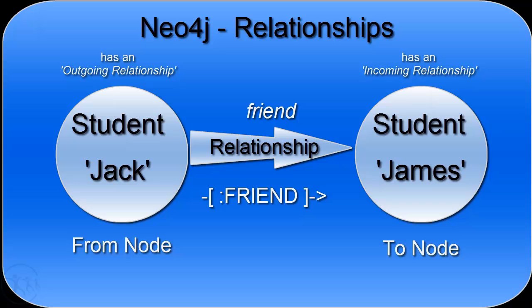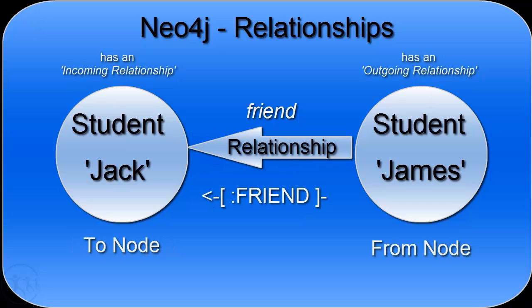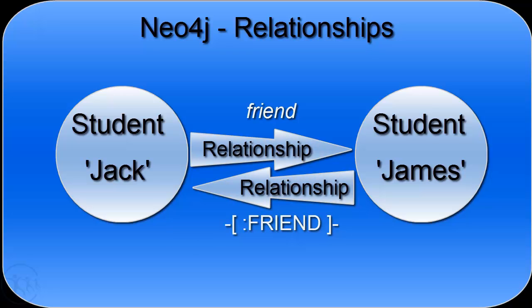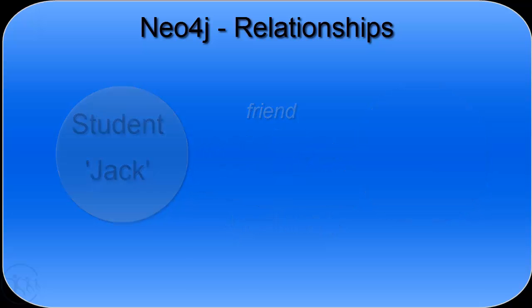Now consider another unidirectional relationship, this time travelling from student James to student Jack. In this scenario, student James is the from node and student Jack is the to node — James is the outgoing side and Jack is the incoming side. When Jack is friends with James and James is also friends with Jack, that is known as a bidirectional relationship. In the next tutorial, we'll be creating all these different types of relationships and adding properties to them.